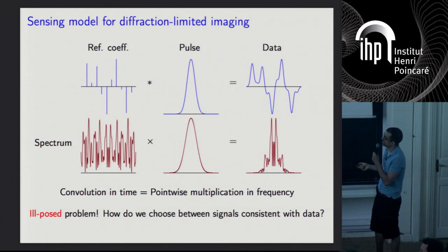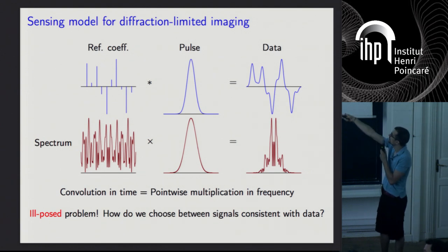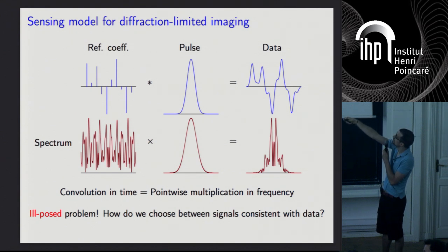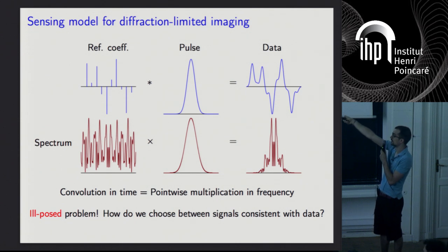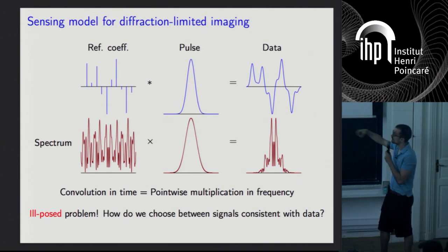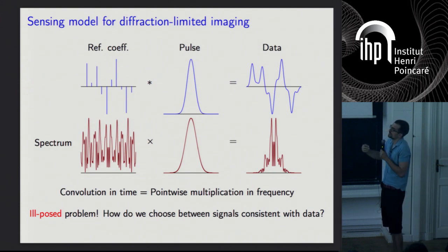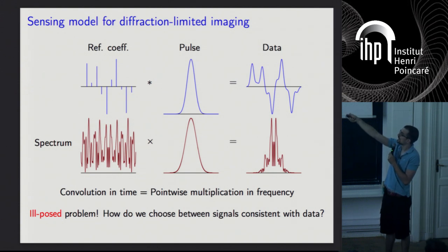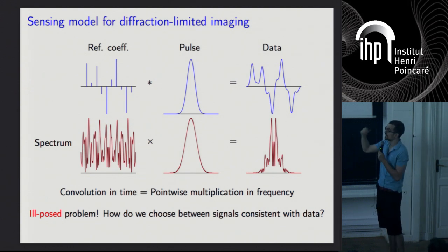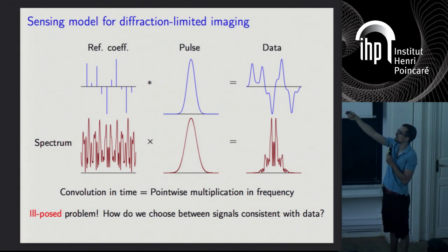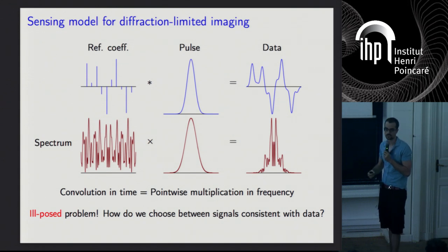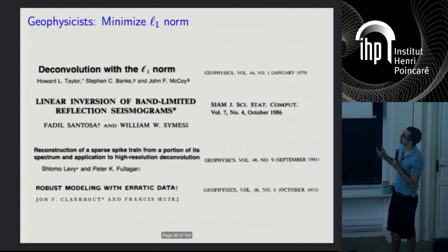Again in the frequency domain, we're losing essentially the high frequencies of the signal — all the high frequencies are suppressed by the convolution because the spectrum of the kernel is zero there. The problem is hopelessly ill-posed, but the question is: can we do something if we make sparsity assumptions on these reflection coefficients?